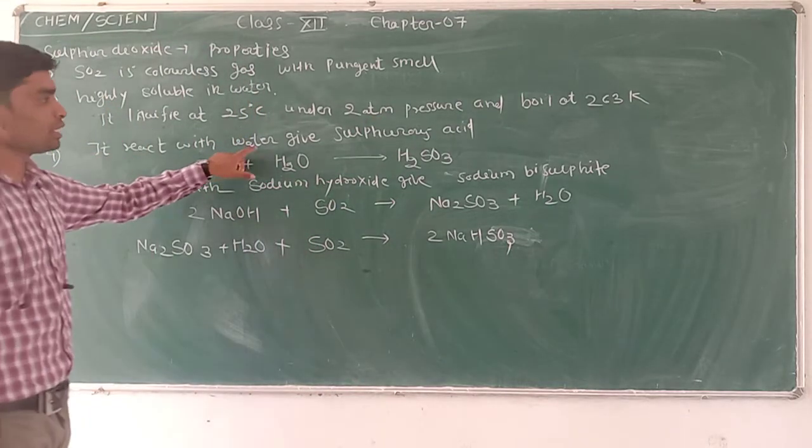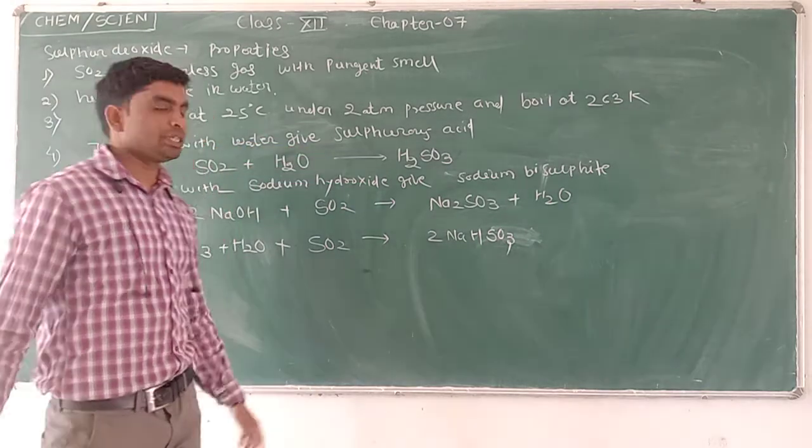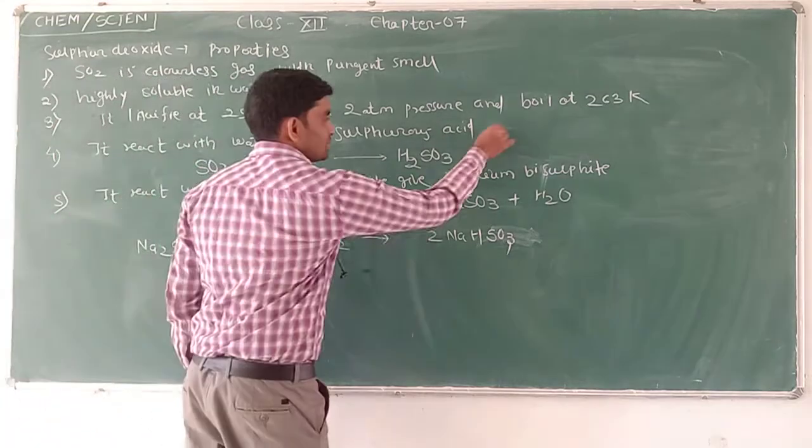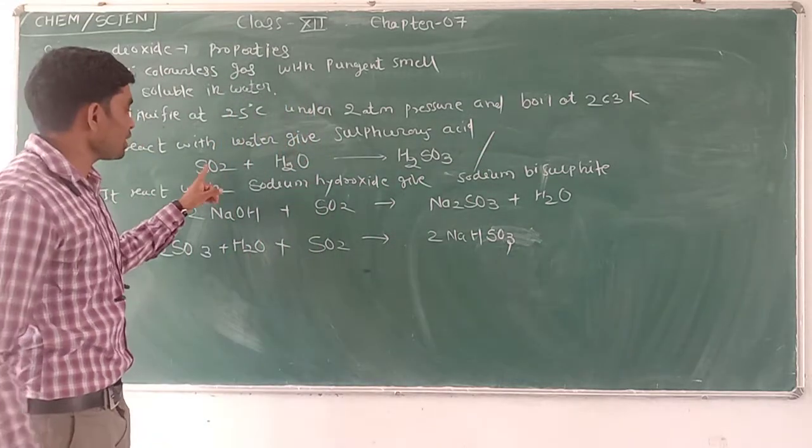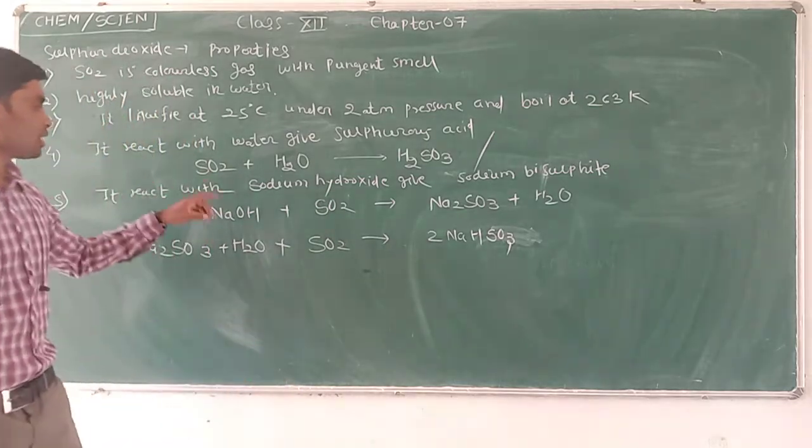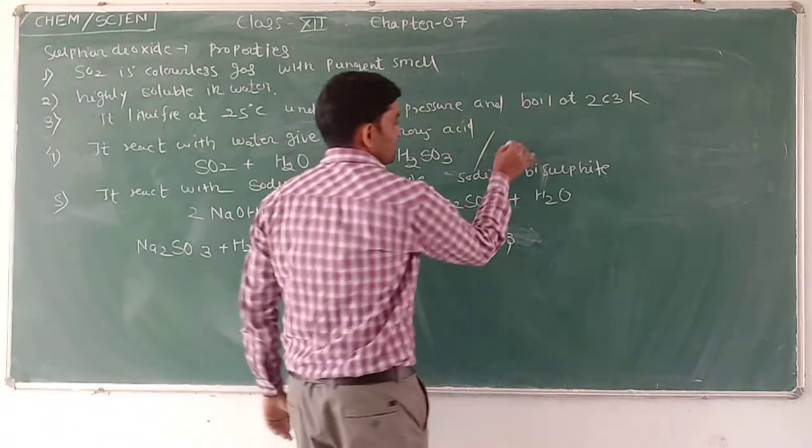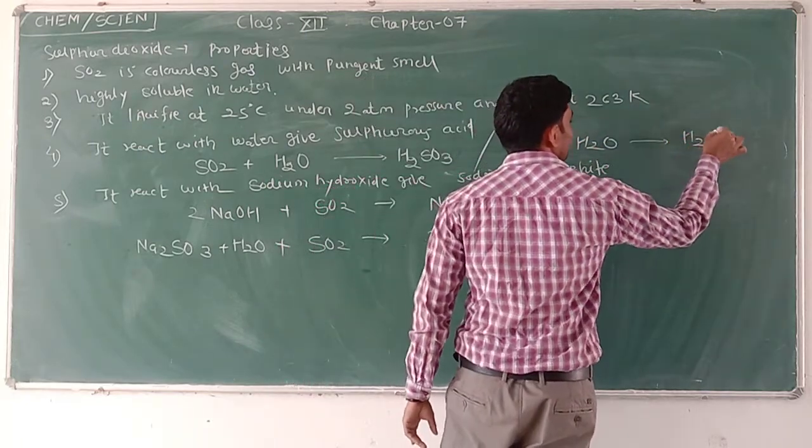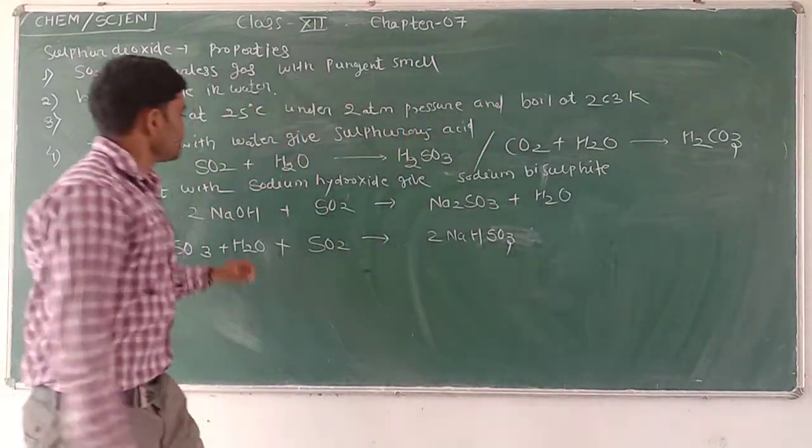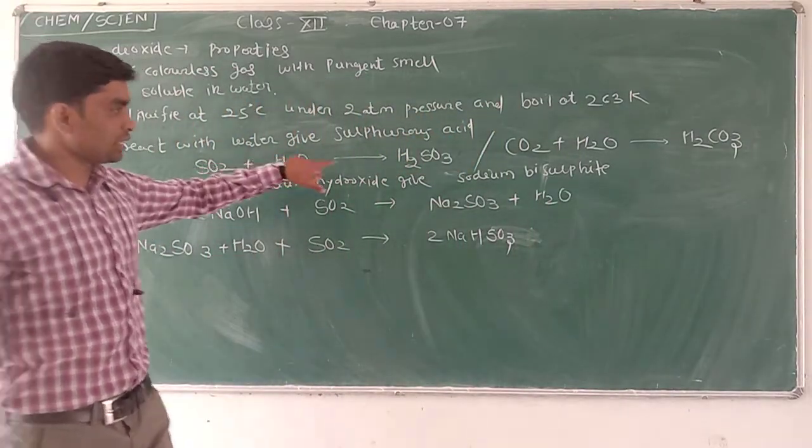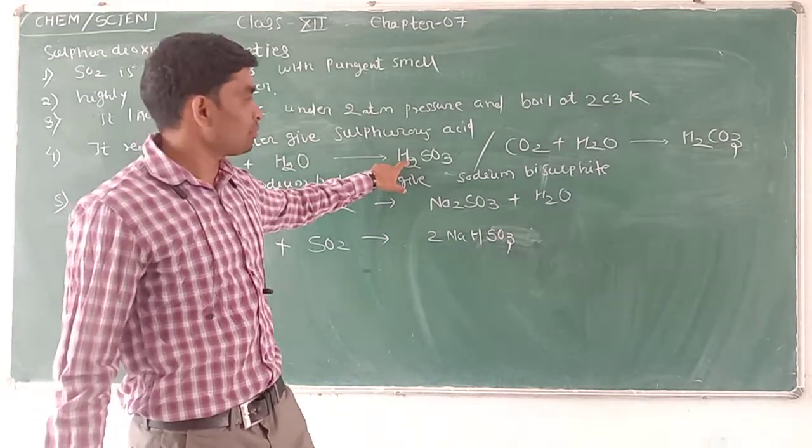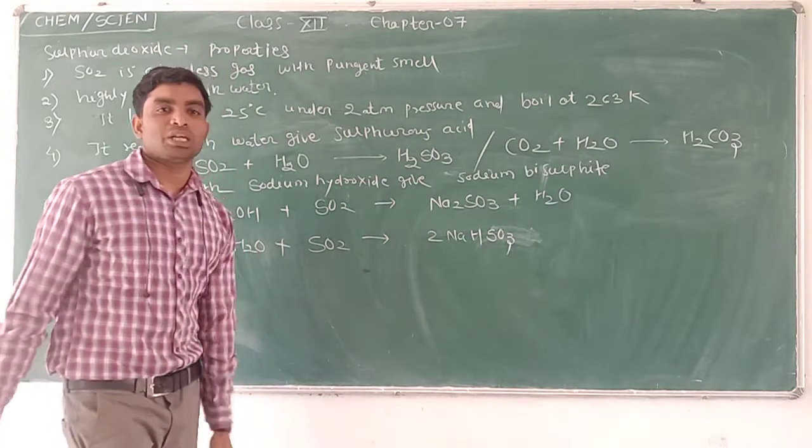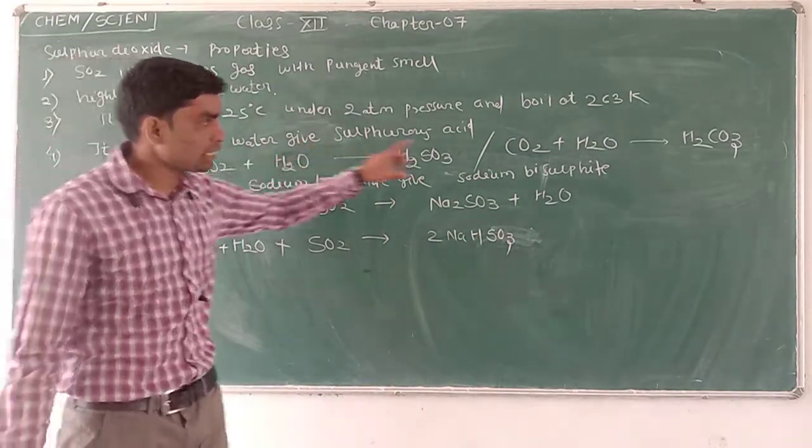When it reacts with water, it forms sulphurous acid H2SO3. The question is: what is the similarity between sulphur dioxide and carbon dioxide? SO2 plus H2O gives H2SO3, and CO2 plus H2O gives H2CO3. Both react with water to form acids.